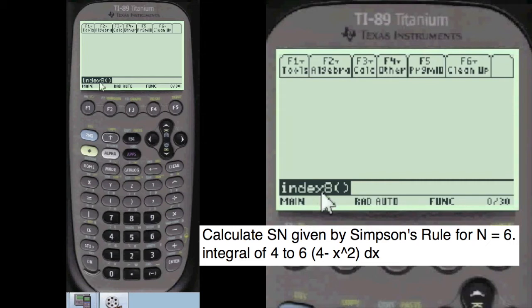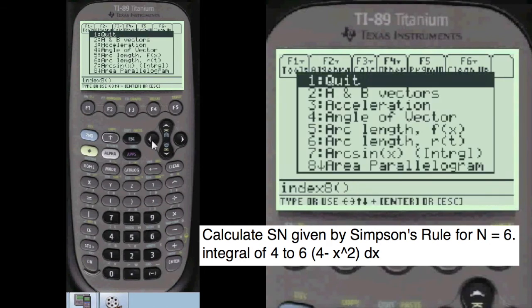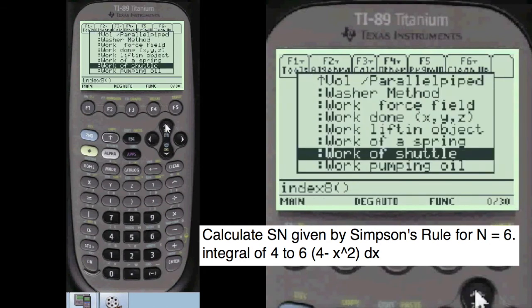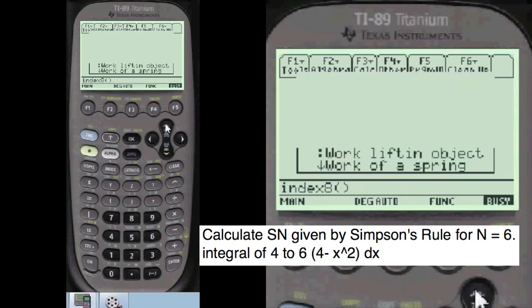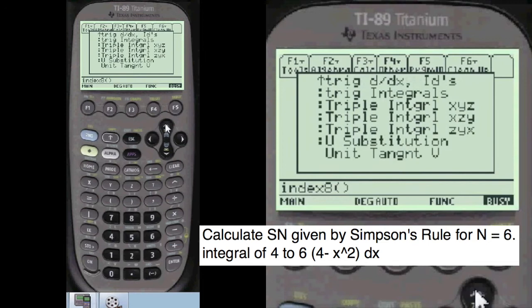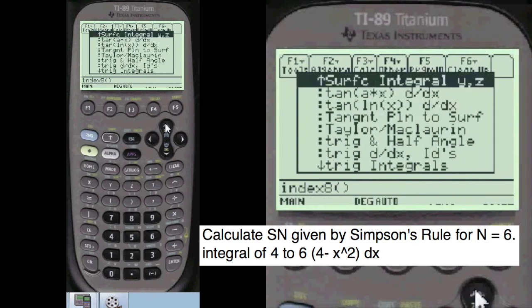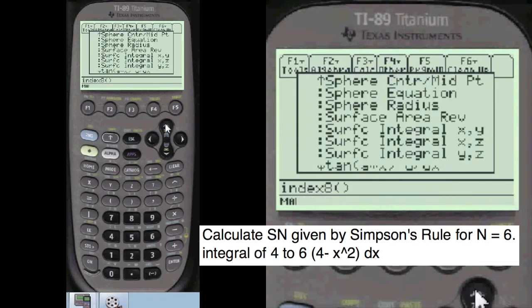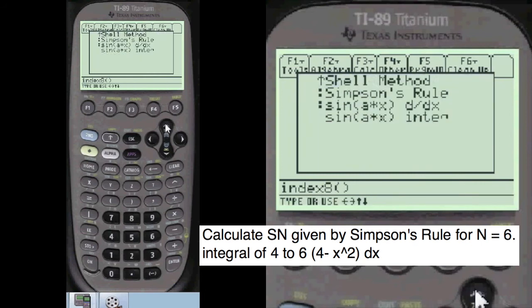Index 8 to get to my menu. I'm going to scroll up to go to the S section, which is Simpson alphabetical. Simpson's rule. There it is there.